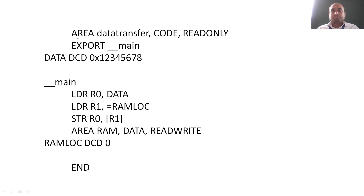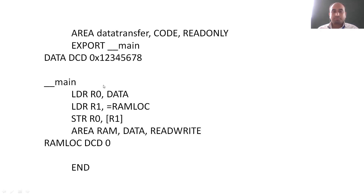The first step is: AREA DataTransfer, CODE, READONLY. AREA represents what memory area we are using. 'DataTransfer' is the file name — you can give any file name. We are using code memory and it is read-only. Then EXPORT __main, which transfers control to the main program. Under the __main label we have written the main program instructions. First, here we use: data DCD 0x12345678.